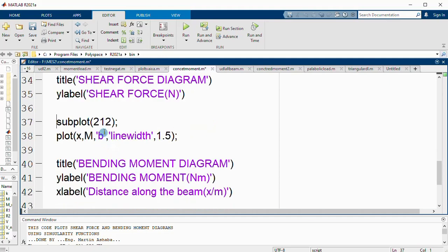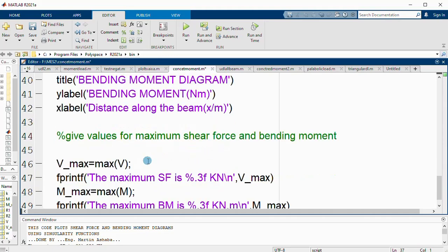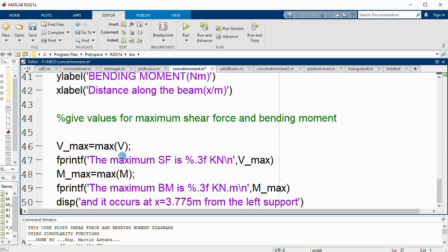We need to also plot these two on the same figure. We use subplot to bring the bending moment diagram at position number 2. The bending moment diagram will be plotted, values of M against x. It will be blue with line width 1.5. Then we label the x and y axis.